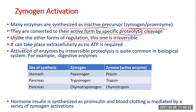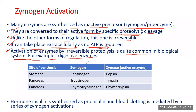Other strategies such as covalent modification and allosteric regulation are reversible. Another characteristic feature of zymogen activation is that it can take place extracellularly — outside the cell — as well as within the cell, because no ATP is required. In covalent modification, ATP is required so it only occurs inside the cell. Activation by irreversible proteolysis is quite common in biological systems, particularly for digestive enzymes.